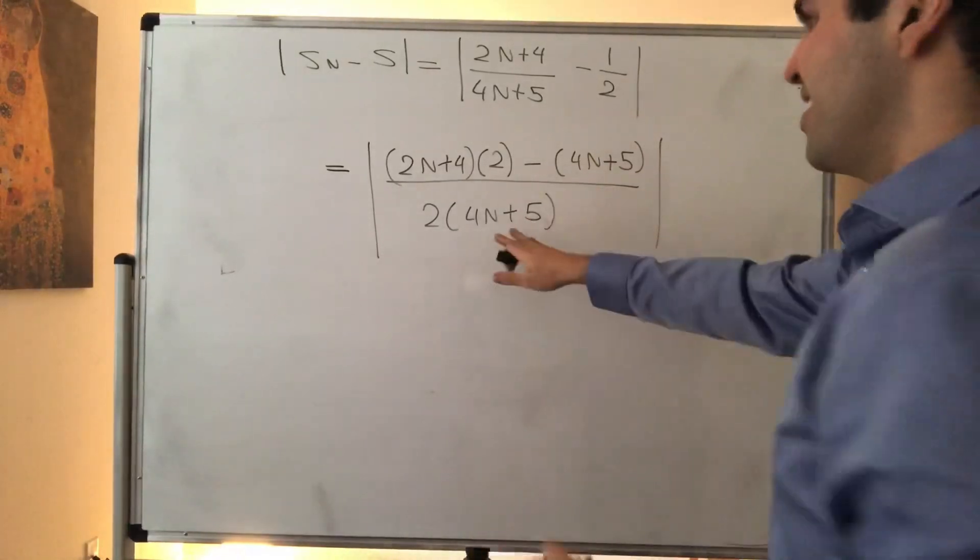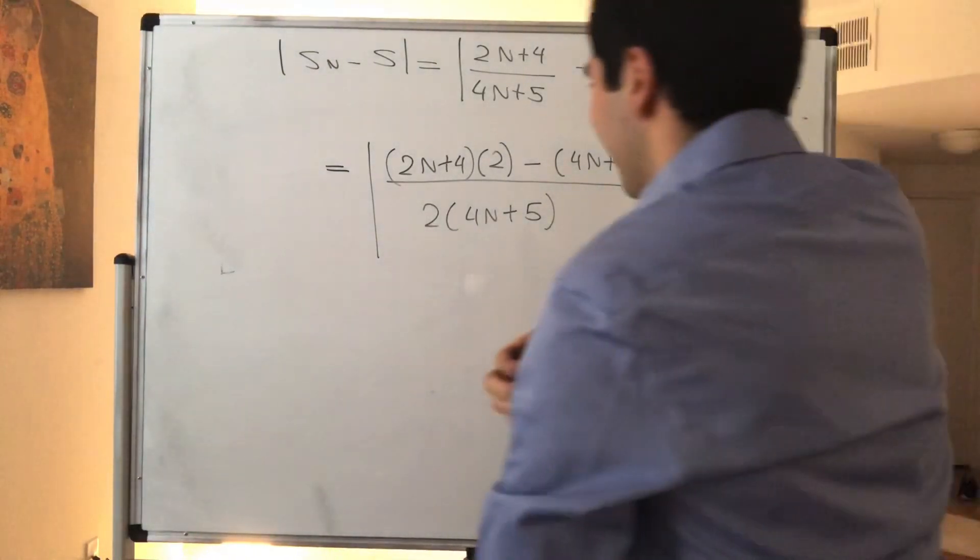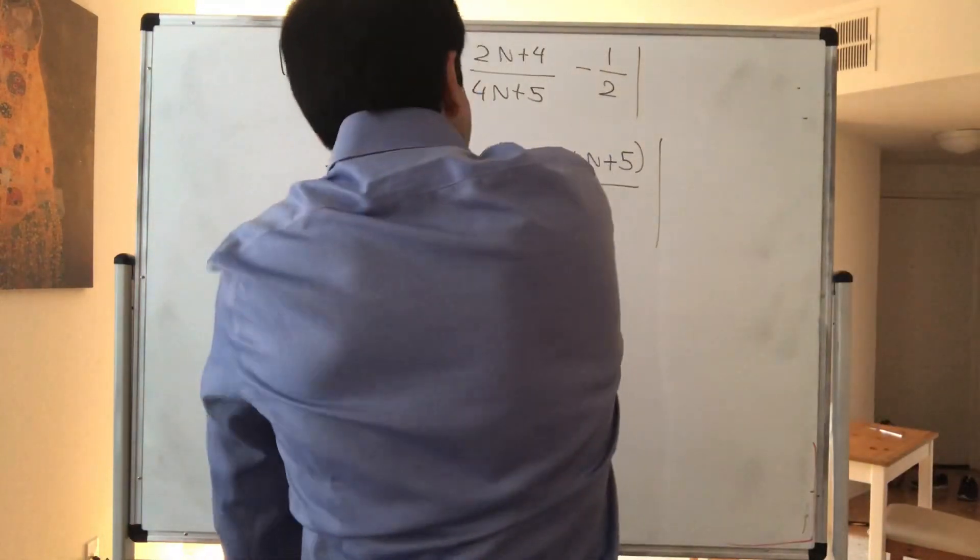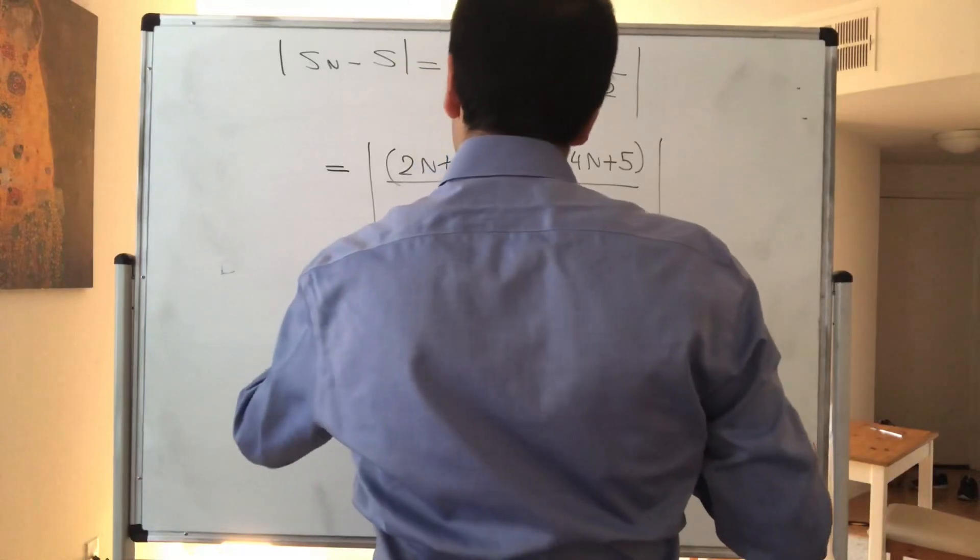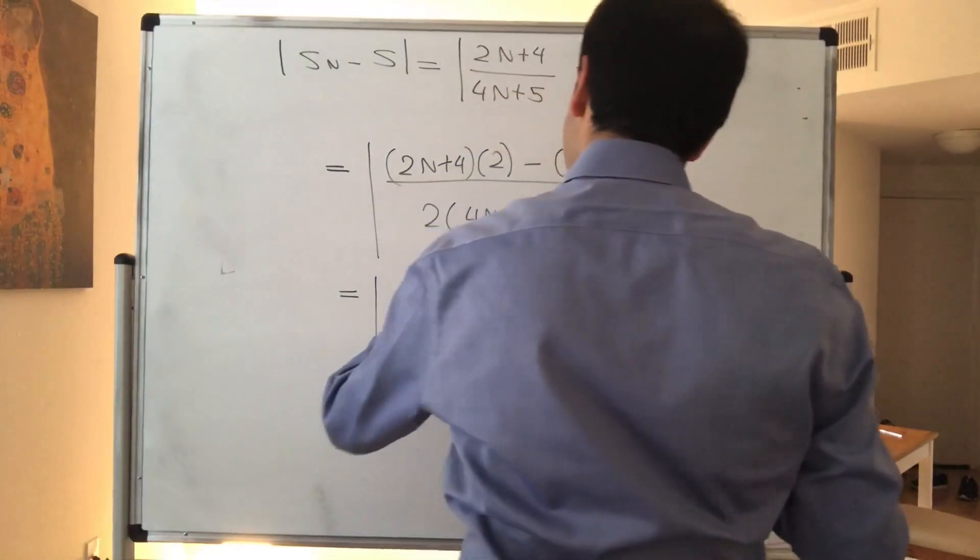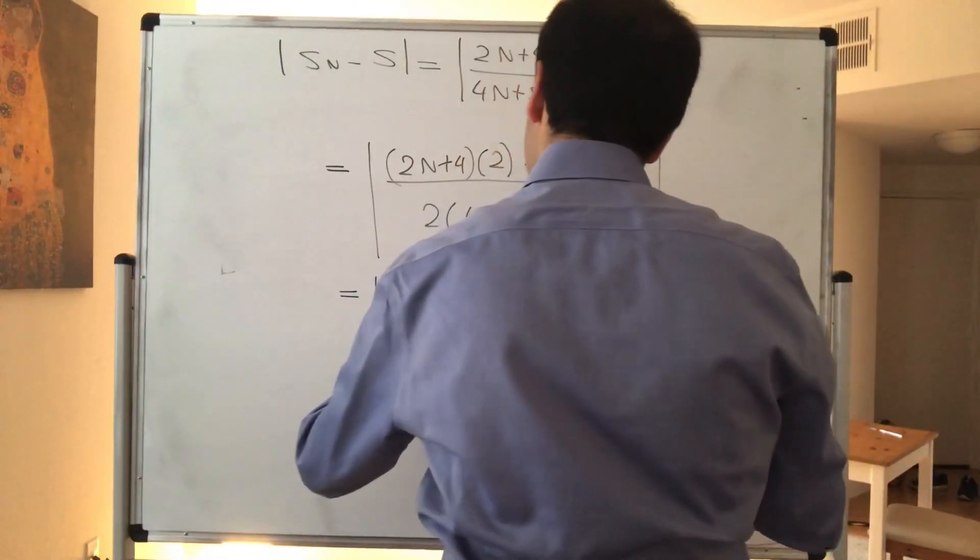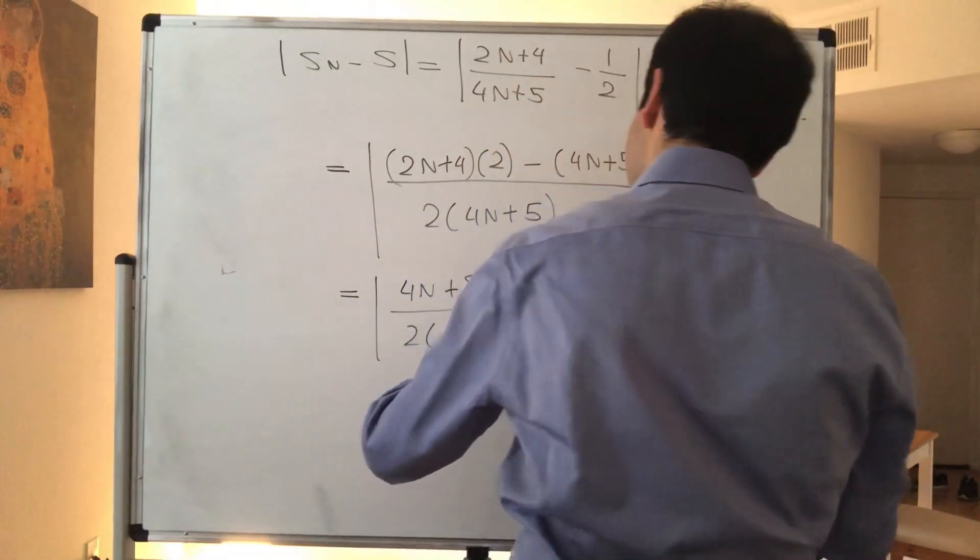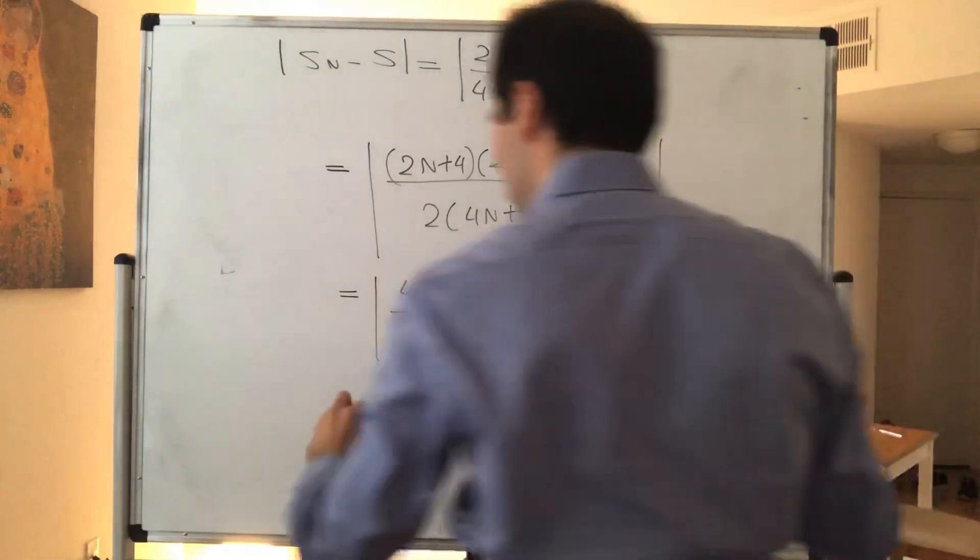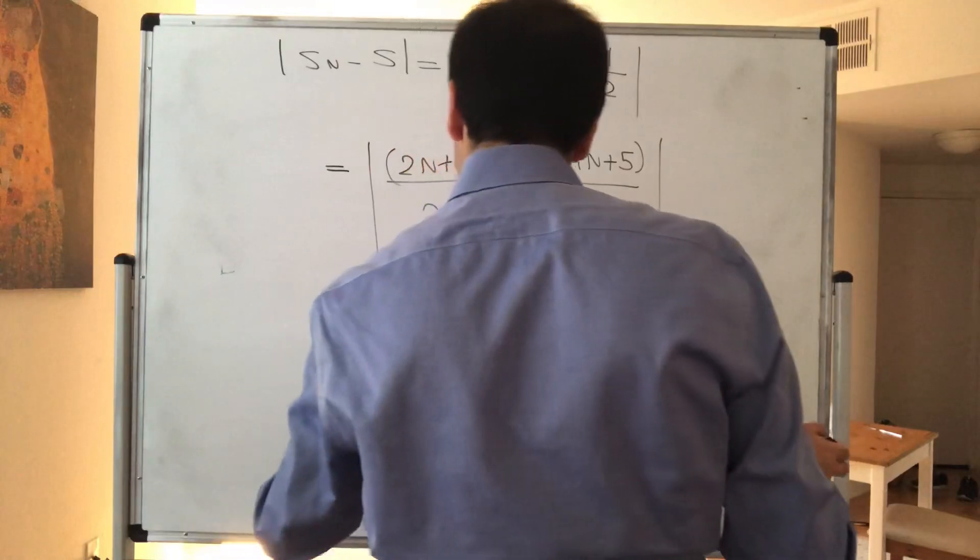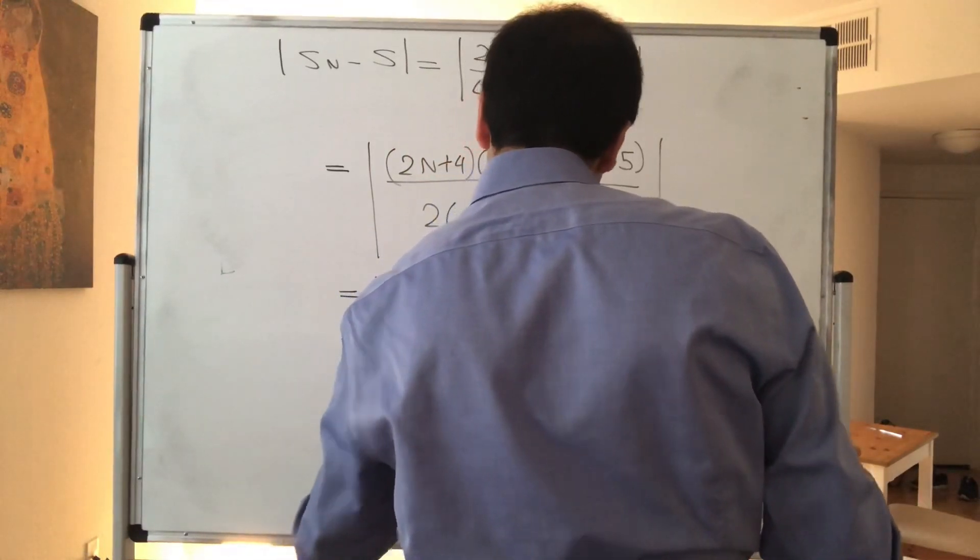over 2 times 4N plus 5. It always sounds like I'm saying 4N, but it's 4N, so not like 4N students and stuff. All right, then this becomes 4N plus 8 minus 4N minus 5 over 2 times 4N plus 5. And lo and behold, things simplify as they should, and that becomes 3 over 2 times 4N plus 5.